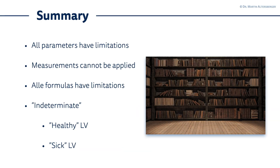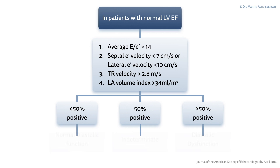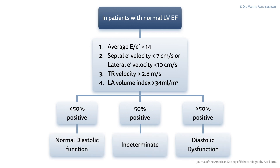Moving on, I want to introduce the term 'indeterminate.' The indeterminate pattern of left ventricular filling pressure, so diastolic dysfunction, was introduced in the 2016 guidelines of the Societies of Echocardiography, where there was a differentiation in healthy left ventricles and sick left ventricles and the resulting diastolic dysfunction. Now let's have a look at the first graph of these guidelines. Patients with normal left ventricular ejection fraction have several parameters you have to acquire to determine if they have normal diastolic function, diastolic dysfunction, or if it is indeterminate — which simply means we do not know.